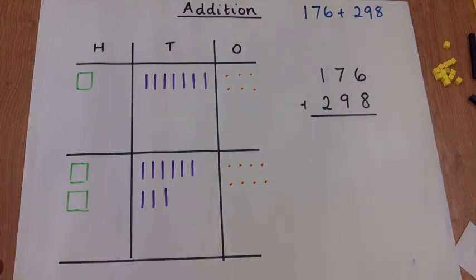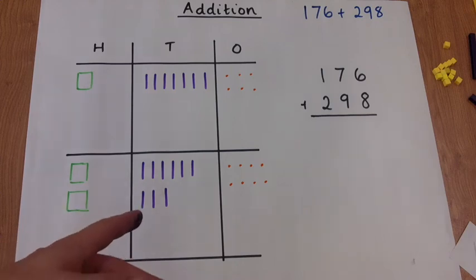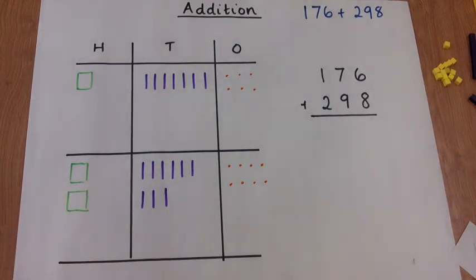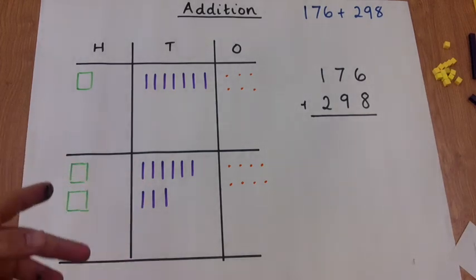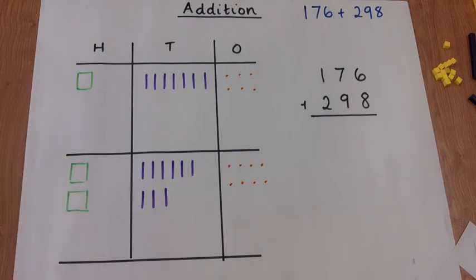On the pictorial, we've used dots in the ones column to represent ones, lines in the tens column for tens, and squares in the hundreds column to represent hundreds.